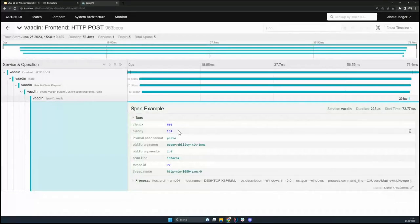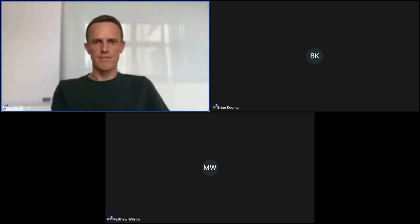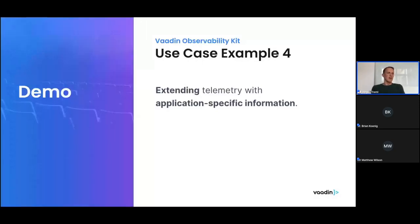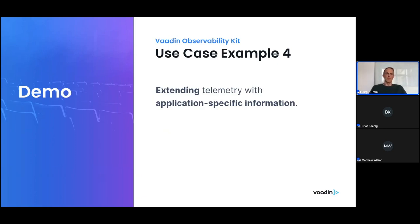Handing back to Jürgen — I just want to add to that last use case: Matthew was showing how to add more technical information, but that's also a way you can add business-relevant information to those spans. For example, information about which user caused this error — obviously always being careful about compliance with data protection laws and anonymizing that data. Any data relevant for your business that will help you track down possible issues — like some database record reference — anything that will help you trace down problems, you can add that way to those spans.